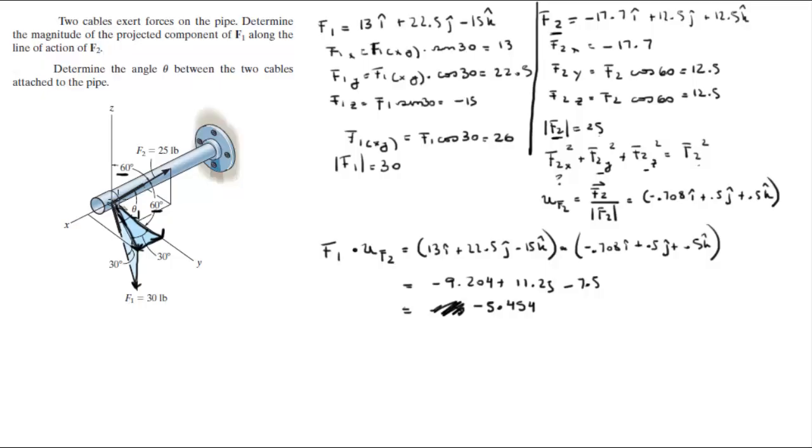And the fact that it's negative means that instead of going the same direction of F2, it's going the opposite direction, just so you know. But they're asking you for the magnitude, and magnitudes are always positive, so it's 5.454. So this is the magnitude of the projection of F1 along F2.